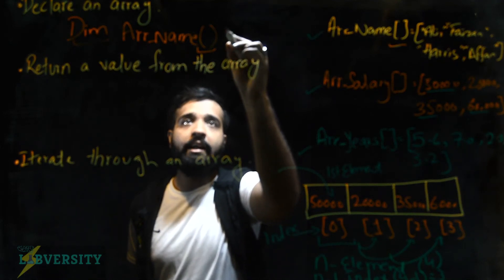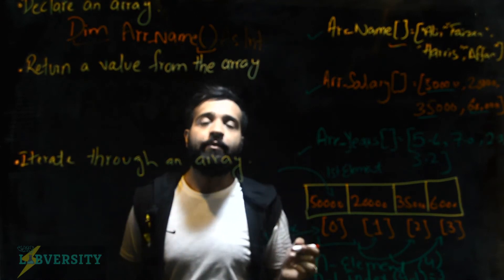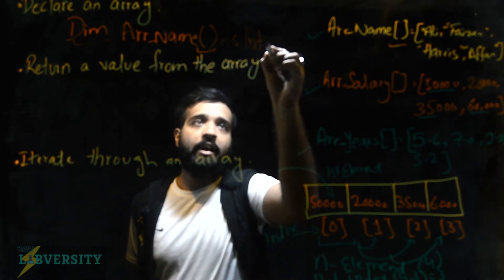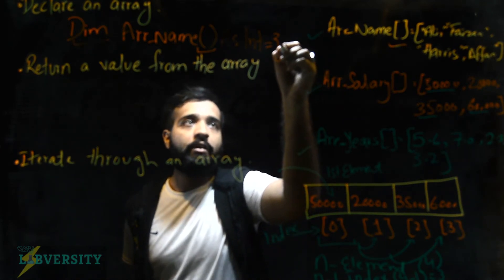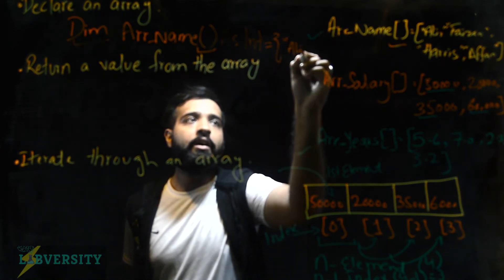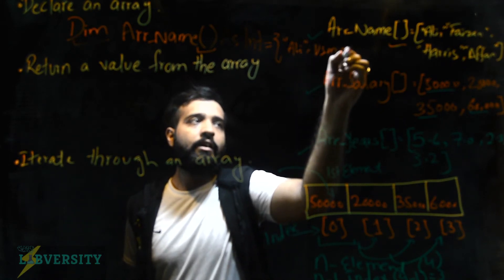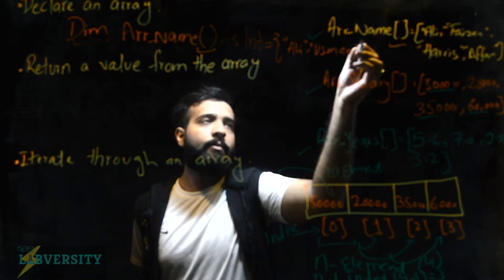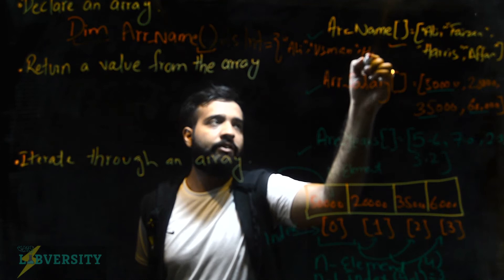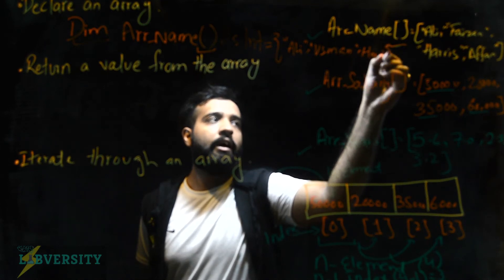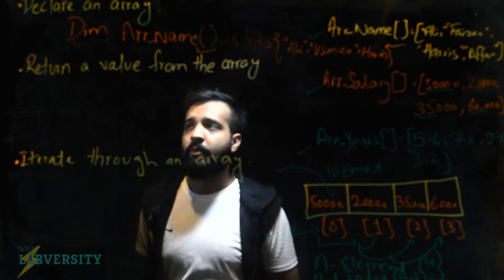Then you write the data type — for example Integer — followed by an equals sign, and then you fill the array with elements inside curly braces: for example 'Ali', 'Osman', 'Horace', and so on. Then you close the curly braces. This is how you declare an array in Visual Basic.